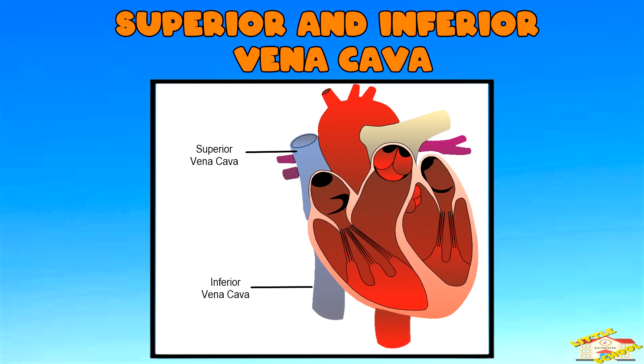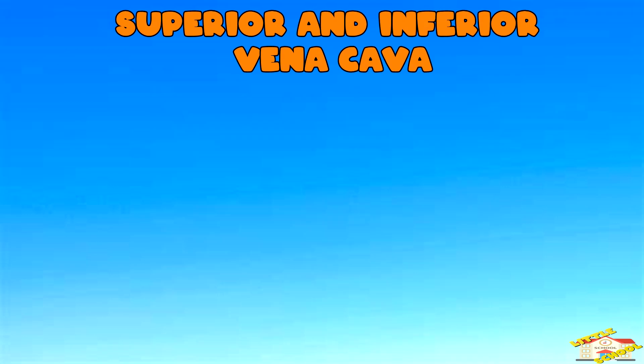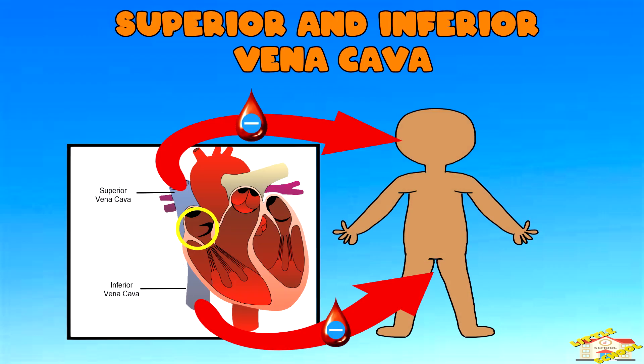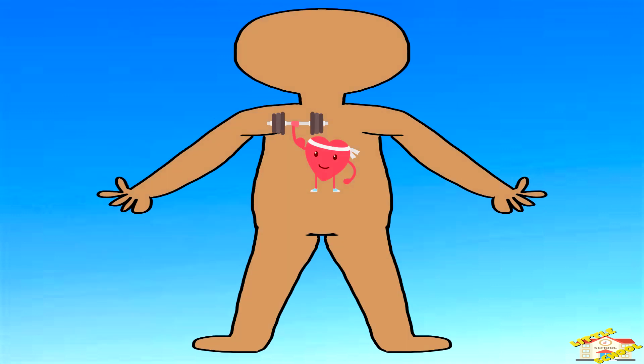Superior and inferior vena cava: these veins bring deoxygenated blood from the body back to the right atrium. These structures work together to keep blood circulating smoothly, moving oxygen-poor and oxygen-rich blood where it's needed.